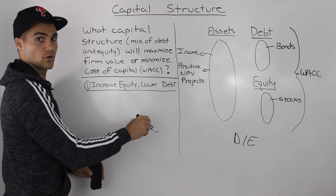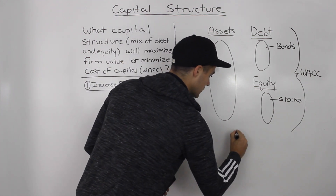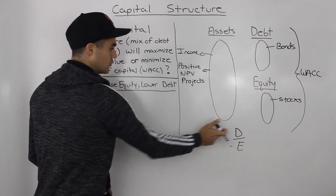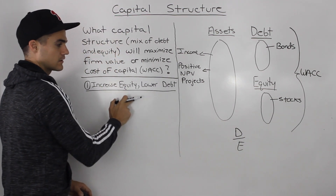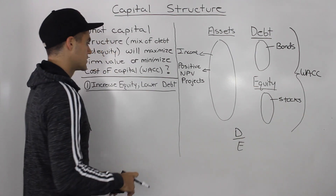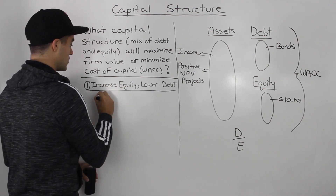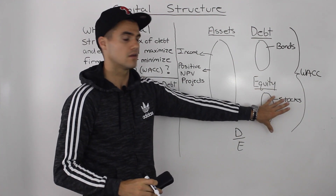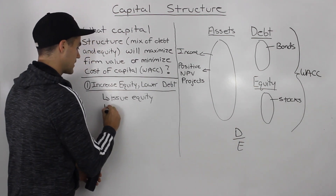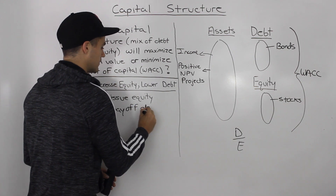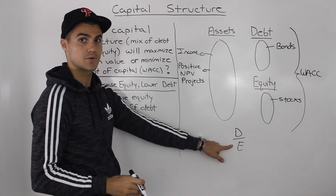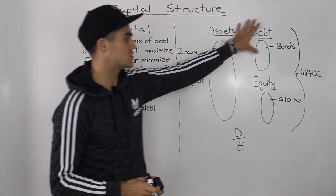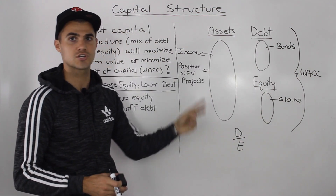For example, let's say we want to lower the debt-to-equity ratio — debt in the numerator over equity in the denominator. To lower this ratio, we can lower the numerator by reducing debt, or increase the equity in the denominator, since increasing the denominator makes the whole ratio go down. We can do both simultaneously: increase equity by going to the market and issuing more equity, then take that money and pay off some of our debt. So we're simultaneously issuing new equity and lowering the debt — we changed the capital structure on the right side without touching the assets.